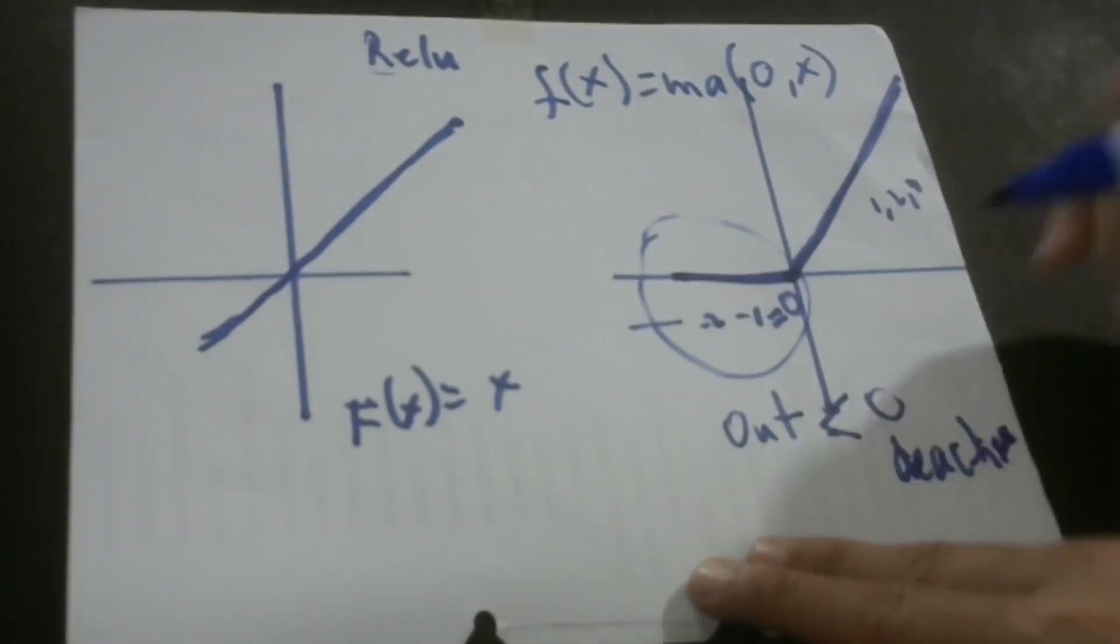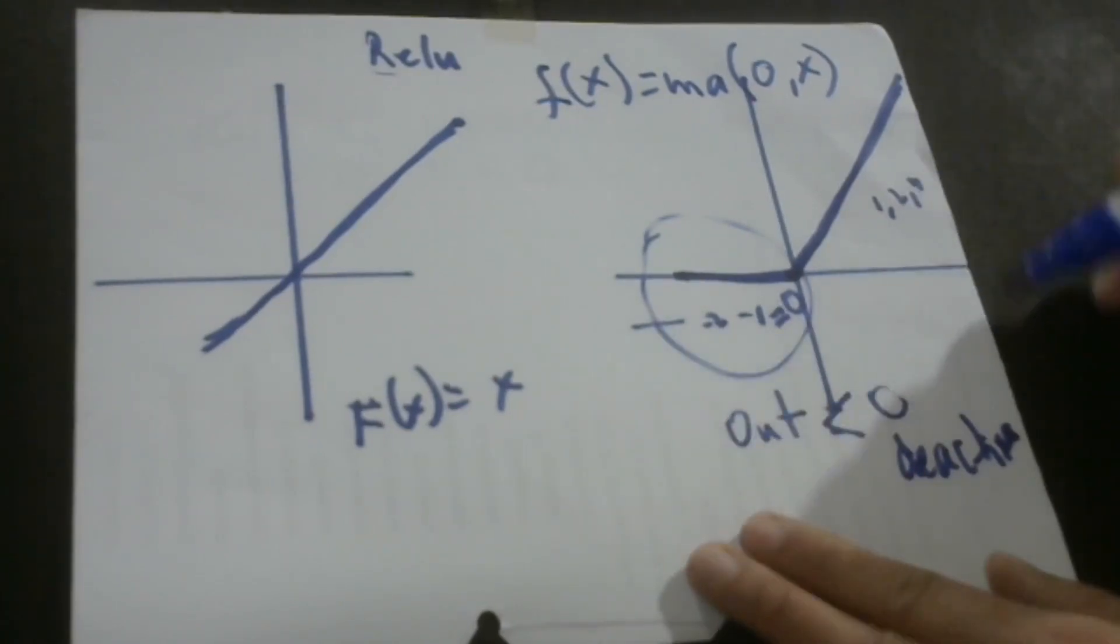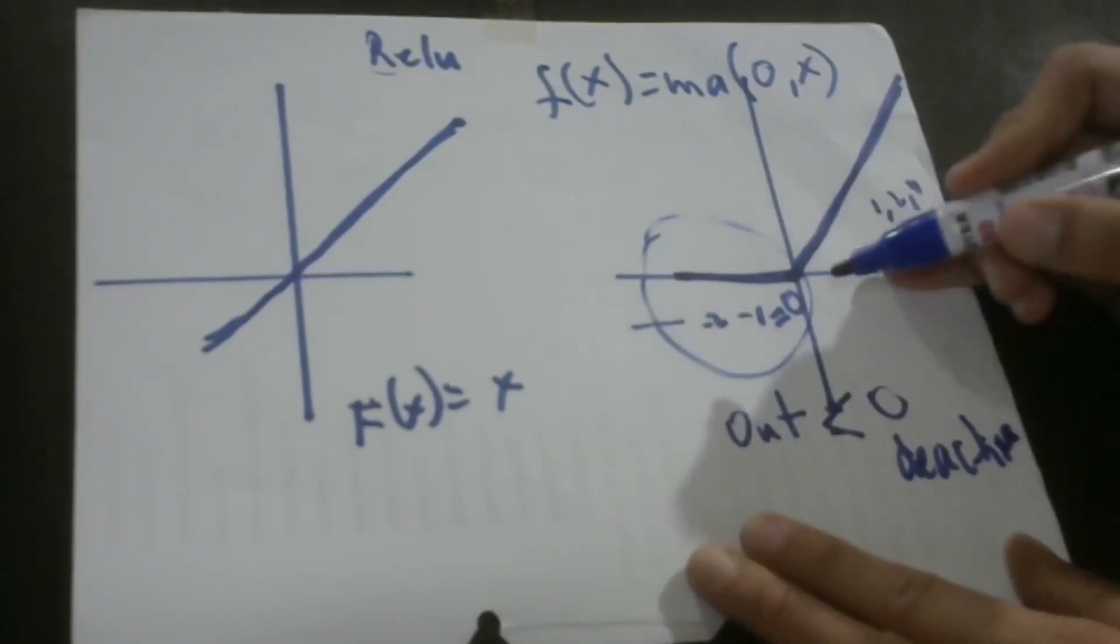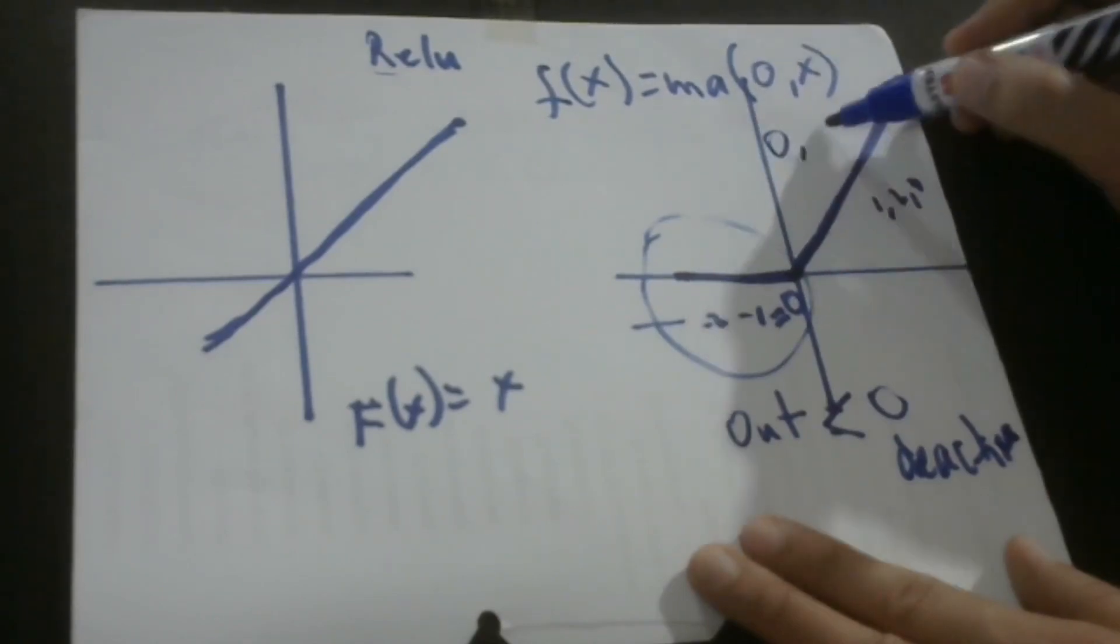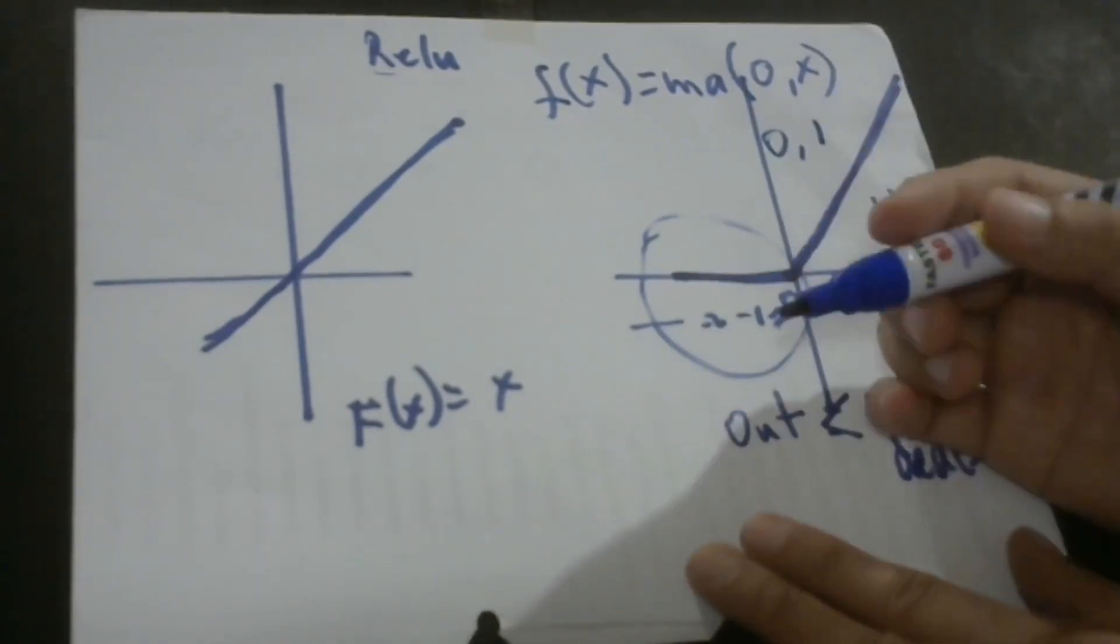But when we do the derivative, the derivations, we're going to have only two values. It could be zero or one. So, we're going to have that one later on.